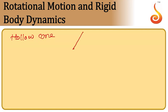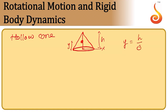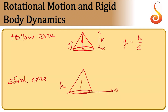For a hollow cone of height h, the center of mass is at a height y equal to h/3. For a solid cone of height h, y is given by h/4. I urge you to remember these values — they are worth remembering because you may not be able to derive them all the time.